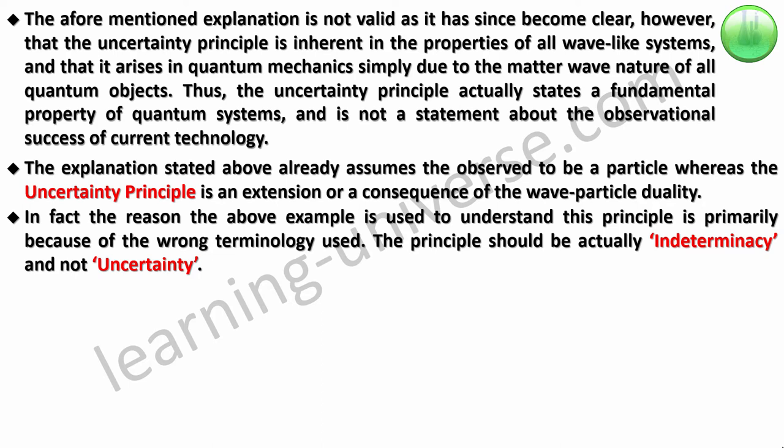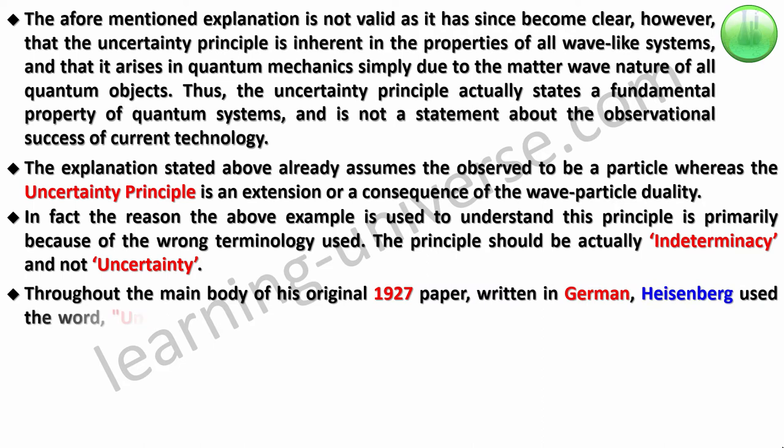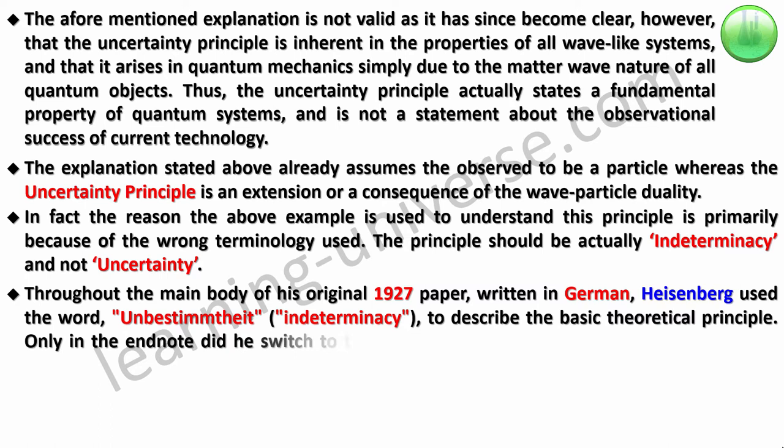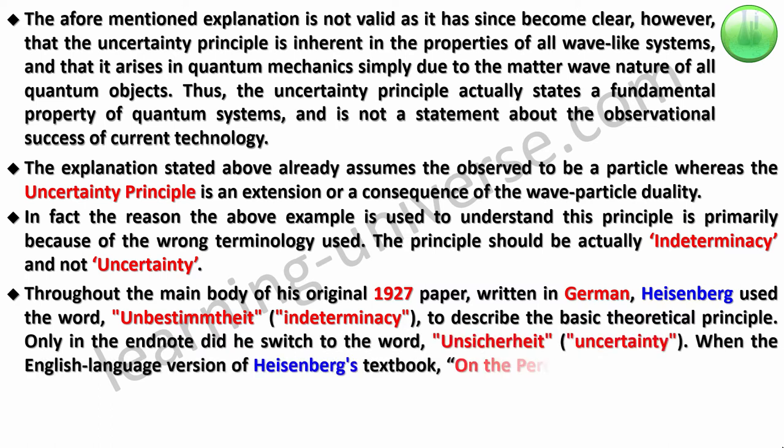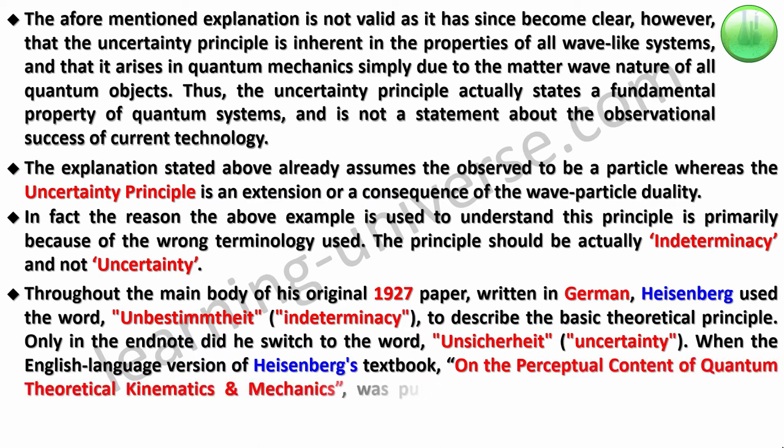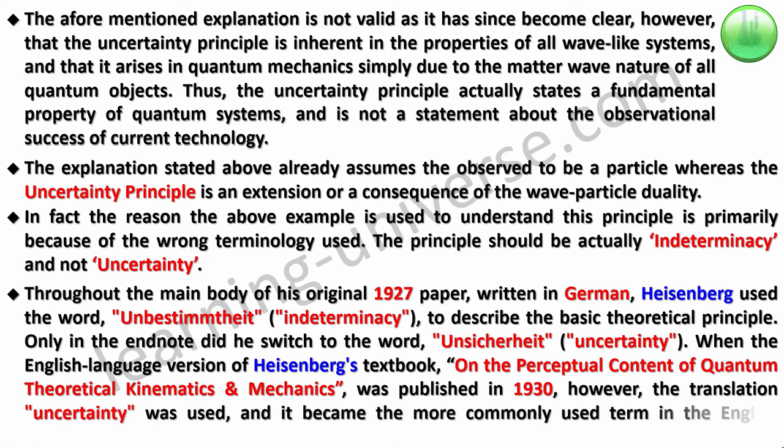In fact, the reason the above example is used to understand this principle is primarily because of the wrong terminology used in the very paper that Heisenberg published. The principle should actually be indeterminacy and not uncertainty. Throughout the main body of his original paper in 1927, written in German, Heisenberg used the word unbestimmtheit to describe indeterminacy as the basic theoretical principle. Only in the end note did he switch the word to ungenauigkeit, which means uncertainty. When the English language version of Heisenberg's textbook was published in 1930, however, the translation uncertainty was used everywhere and it became the more commonly used term in the English language thereafter.